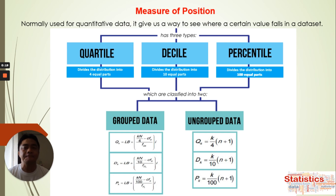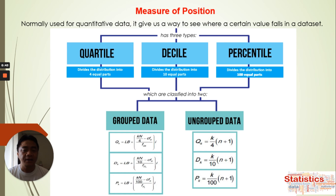What is the measure of position? This is normally used for quantitative data and it gives us a way to see where a certain value falls in a data set. The data set will be divided accordingly. We have three types: the first is quartile, the second is decile, and the third is percentile. For quartile we divide the data set into four equal parts, for decile into 10 equal parts, and for percentile into 100 equal parts.